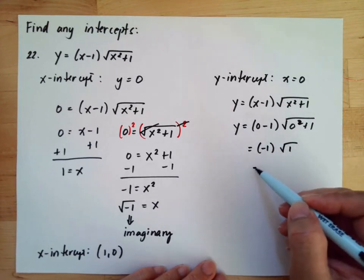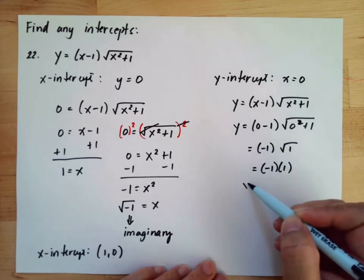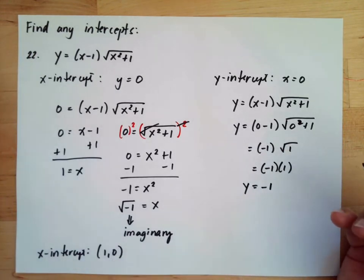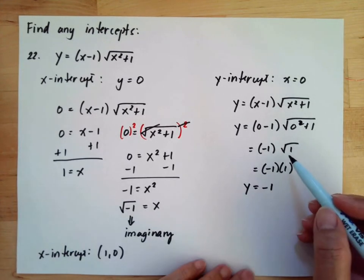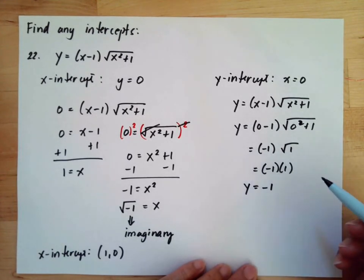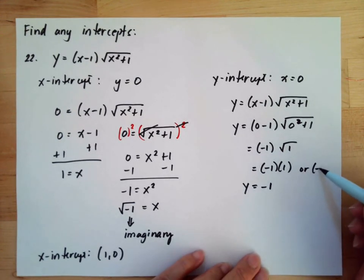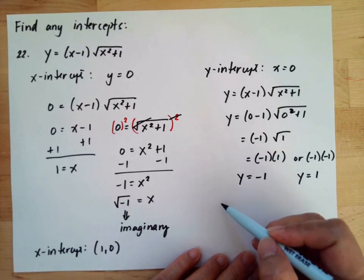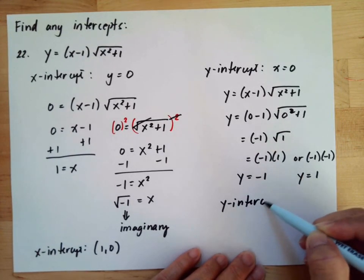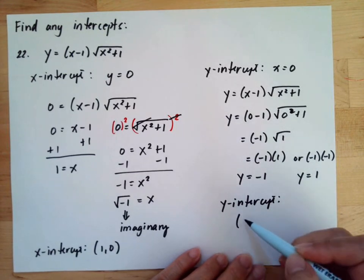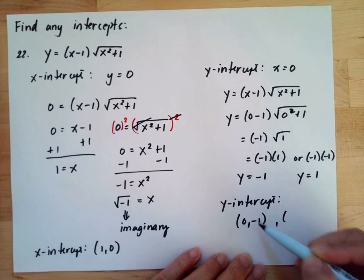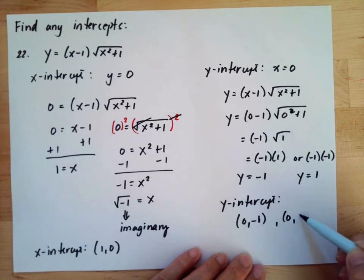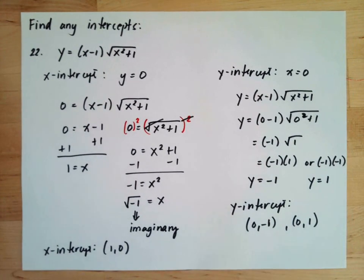The square root of 1 is 1, so y equals negative 1. But since it involves a square root, there are two possible answers: negative 1 and positive 1. So we have y equals negative 1 and y equals 1. Therefore, the y-intercepts are (0, negative 1) and (0, 1). These are the intercepts for this problem.